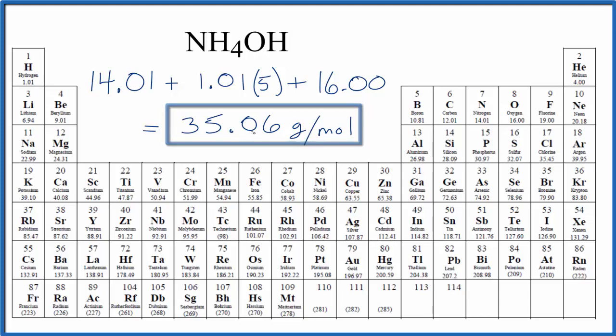That means if we add 35.06 grams of NH4OH, that would be one mole of ammonium hydroxide. If we had one mole of ammonium hydroxide, it would have a mass of 35.06 grams. This is Dr. B, finding the molar mass for NH4OH, ammonium hydroxide.